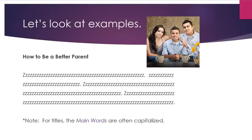Let's look at some examples. The title 'How to Be a Better Parent' is written in bold at the top and separated from the rest of the article. For titles, the main words — nouns, verbs, adjectives — are often capitalized. So you see 'How,' 'Be,' 'Better,' 'Parent' capitalized, but not 'to' and 'a.' Articles, prepositions, and similar words are not capitalized. The first word of the title is always capitalized.